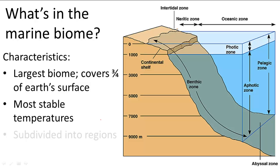Without contact to sunlight, deeper regions only receive indirect heating from the heated water molecules at the surface. So temperatures are even more stable as you go deeper, and the very bottommost regions of the ocean barely receive any temperature changes.